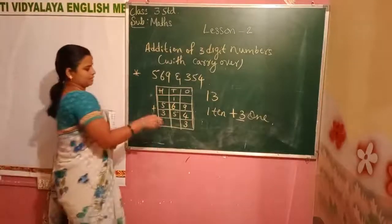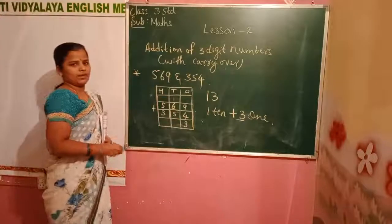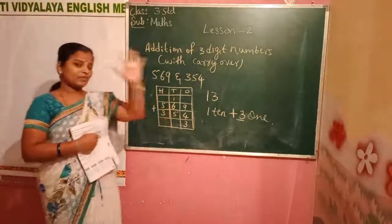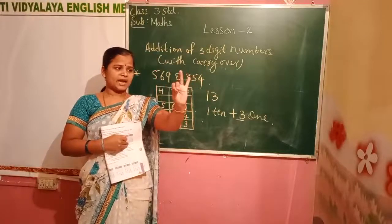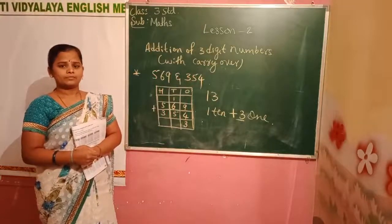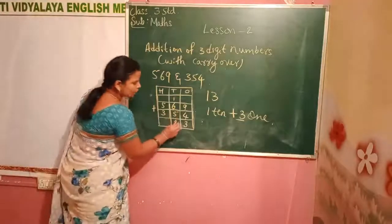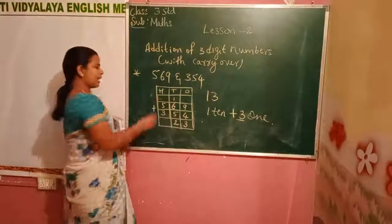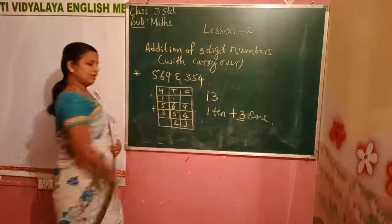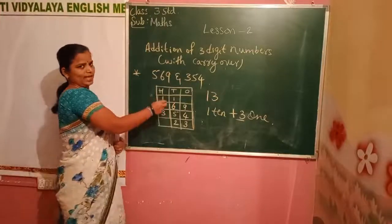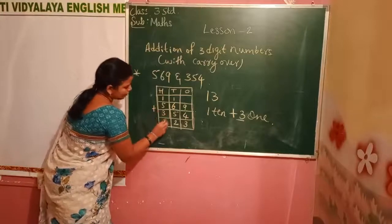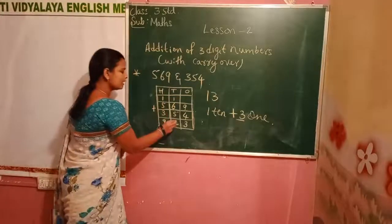Next, add the tens place numbers including the carry. 6 plus 5 is 11, and 11 plus 1 carry is 12. Write 2 in the tens place and carry 1 to the hundreds place. Then 5 plus 3 is 8, plus 1 carry is 9. That is the answer.